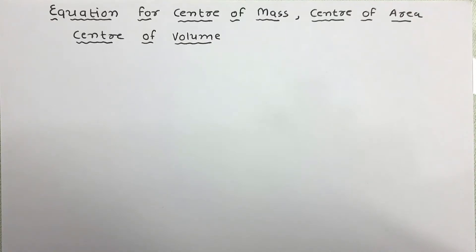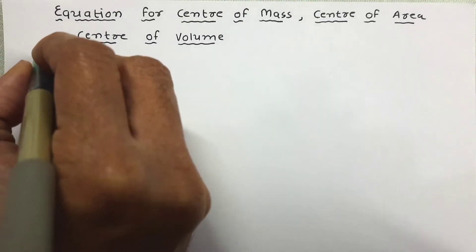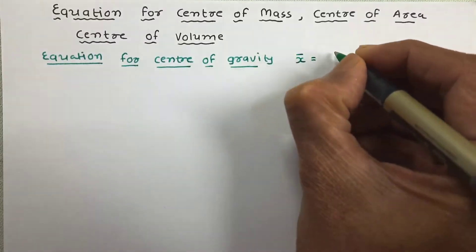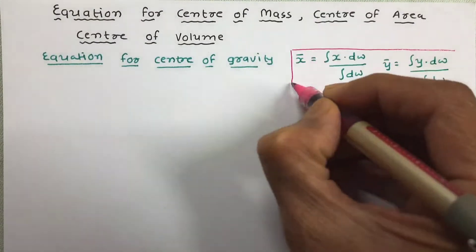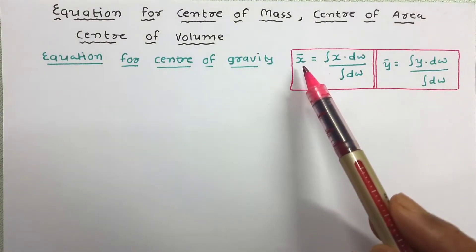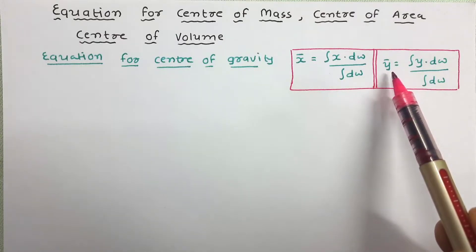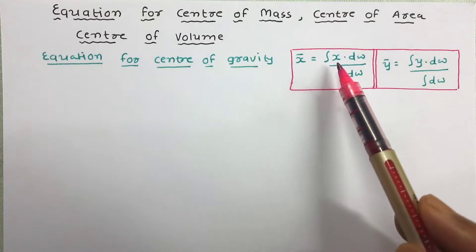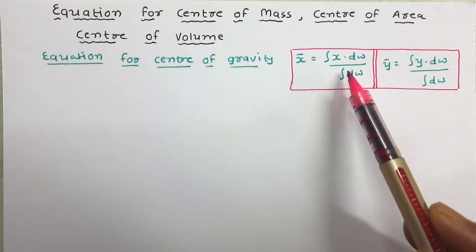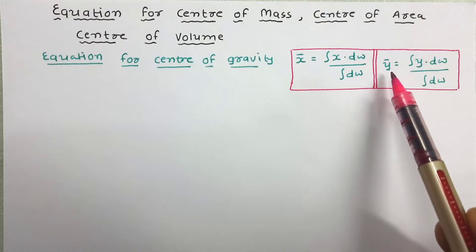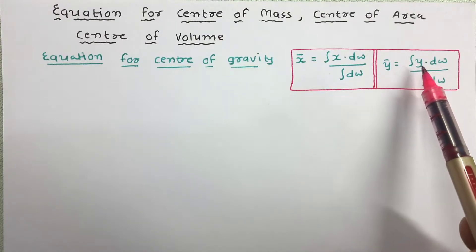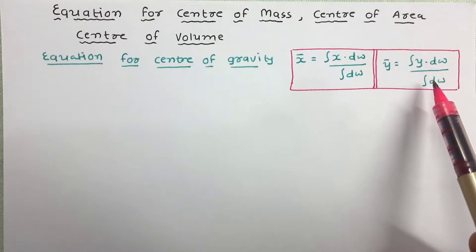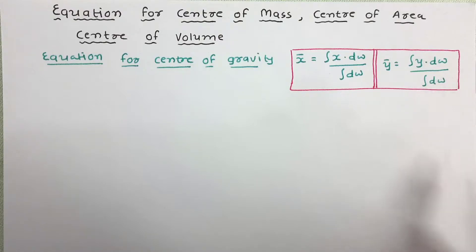In the previous lecture we have derived the equation for center of gravity, so let us revise the equation again. The equations for x̄ and ȳ are: x̄ is equal to integration of x dw divided by integration of dw, and ȳ is equal to integration of y dw divided by integration of dw.